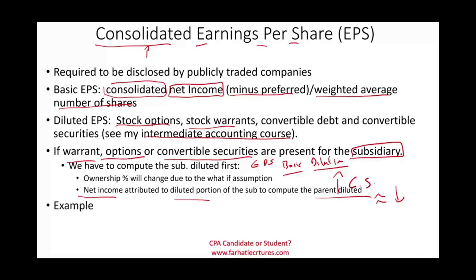The best way to illustrate this is to look at a comprehensive example. The key point to remember: first, compute the basic and dilutive for the sub. Then, if the sub has dilutive options, take the net income contributed to the diluted computation and use it in the parent's consolidated net income when computing the dilutive EPS.